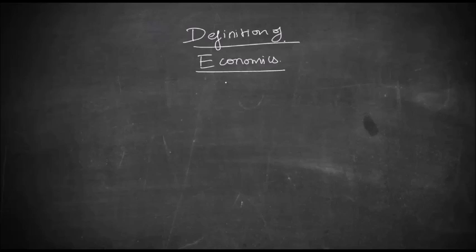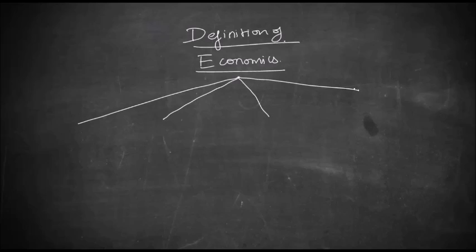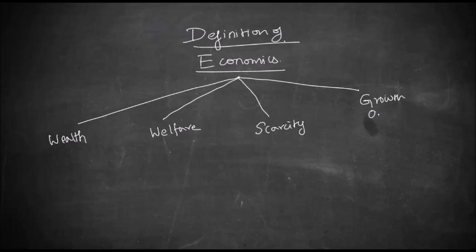Let us understand the basic definition of economics. The definition of economics can be divided into four categories, because economics has been defined from four different angles: the definition based on wealth, the definition based on welfare, the definition based on scarcity, and finally the growth-oriented definition. Each definition was given by a different scholar. Let's see them one by one.